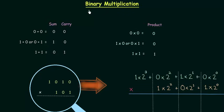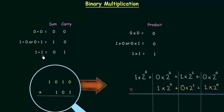In this lecture we will learn binary multiplication. In the binary addition lecture we found: 0 plus 0 gives sum equal to 0 and carry equals 0; 1 plus 0 or 0 plus 1 gives sum equal to 1 and carry equals 0; and 1 plus 1 gives sum equal to 0 and carry equals 1.